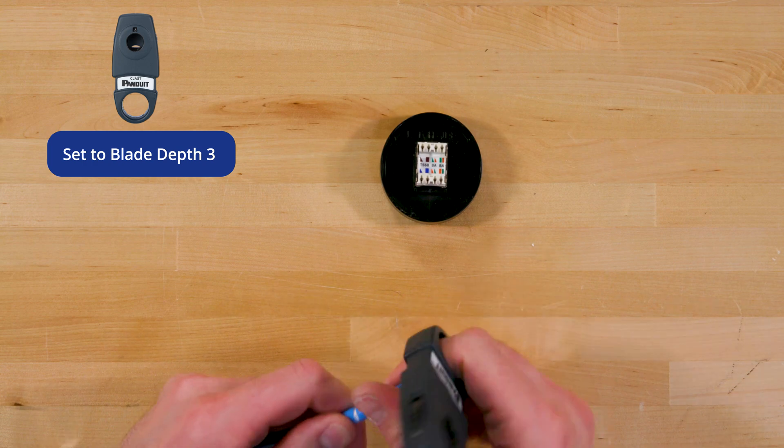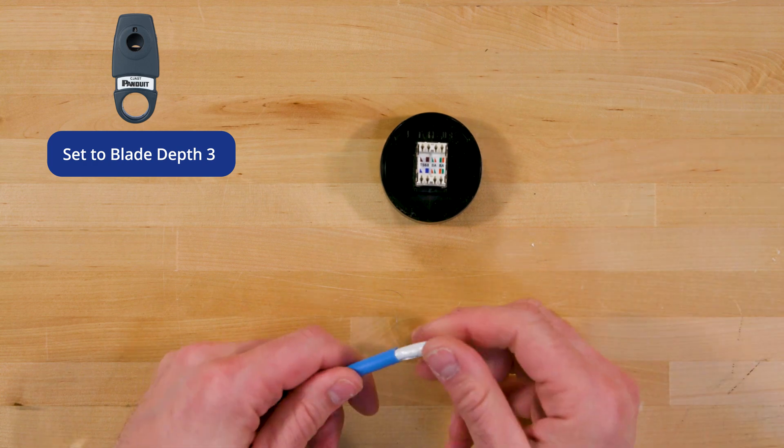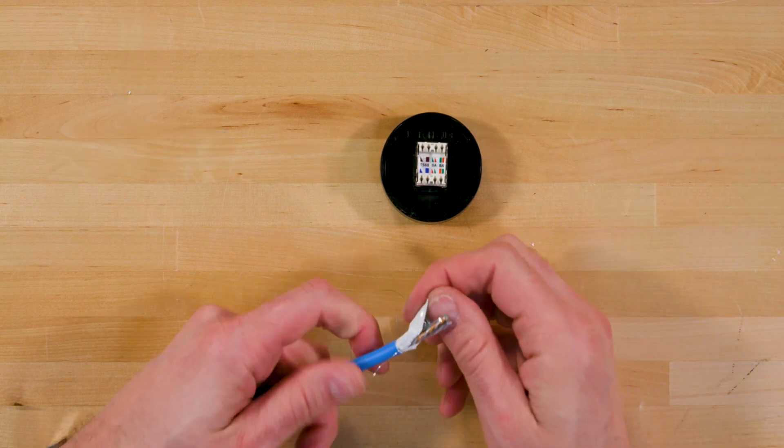Using the C-JAST tool, score the jacket about 5 centimeters from the end of the cable. Avoid nicking the foil beneath the cable jacket.